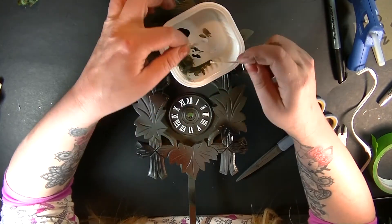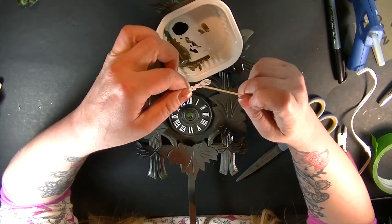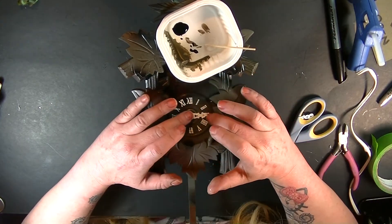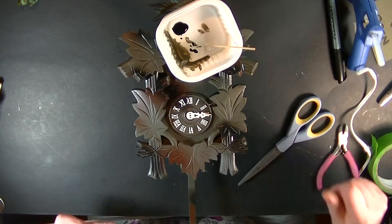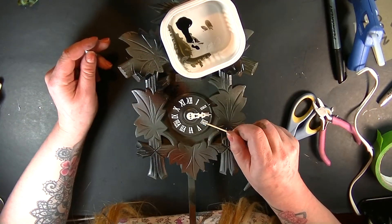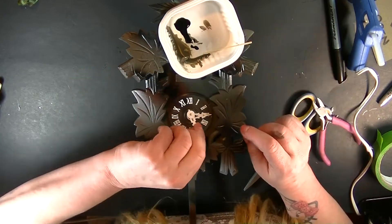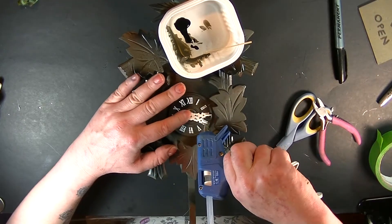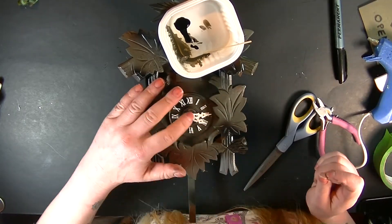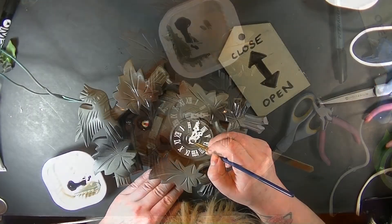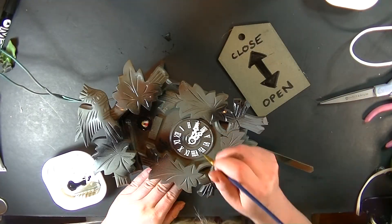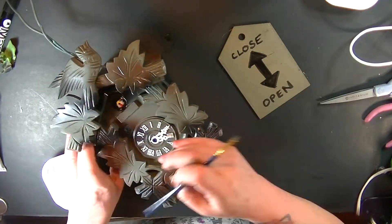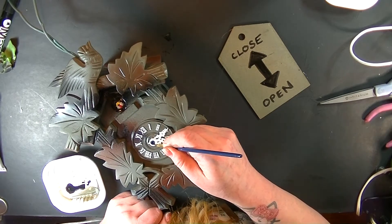And now to glue the hands back on. And then I'm going to use a bit of E6000 glue and some hot glue, whatever works. Just adding a black circle there. It's almost done.